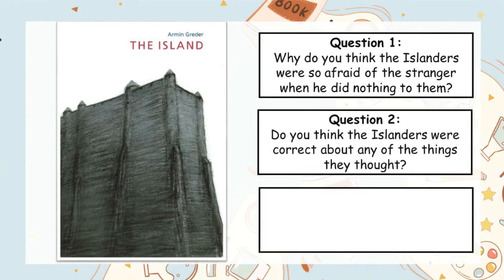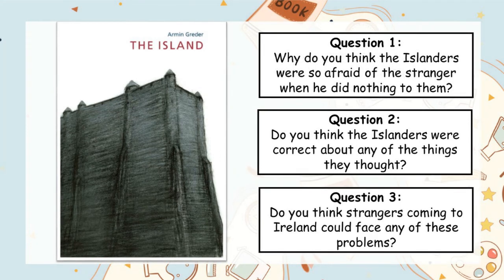The second question is a little bit more challenging. I was wondering: do you think there was anything the islanders were correct about? Or was there anything they said or did that you actually agreed with? Pause the video and write down your answer to this question. And my third and final question brings this story a little bit to life. When I saw the cover and read the book, I couldn't help but think about a big wall that somebody said they were going to be building in America. So my third question is: do you think strangers coming to Ireland could face any of the problems the stranger did? Pause the video and write down your answers to this question.